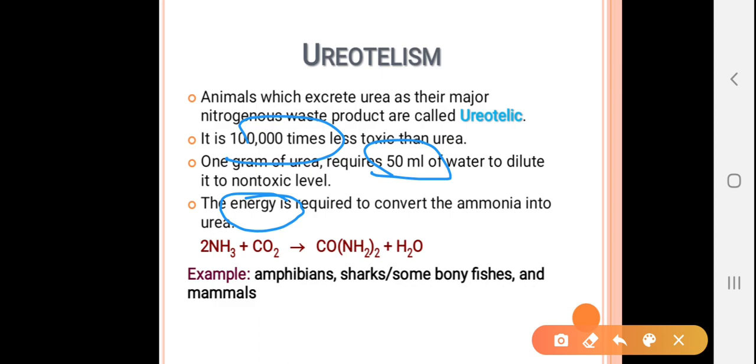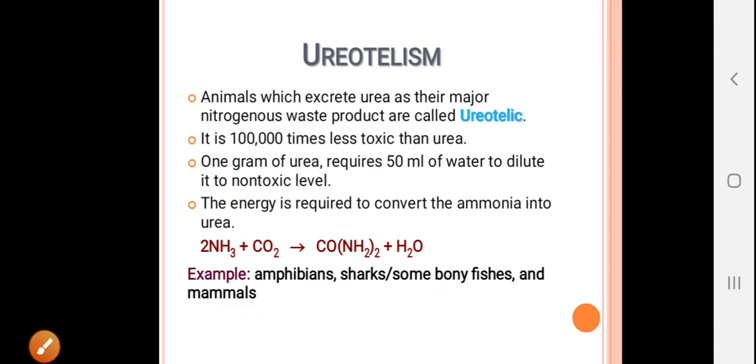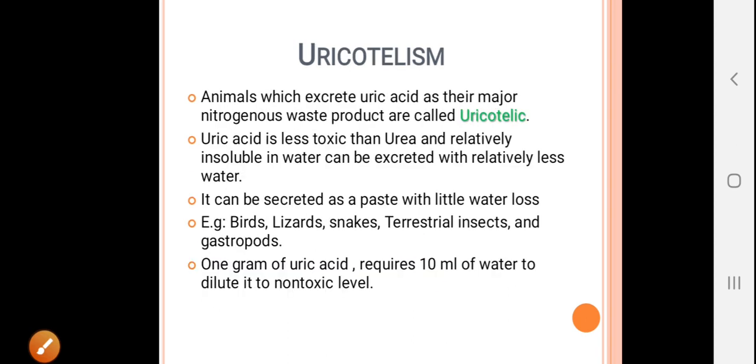Mammals, amphibians, sharks, and bony fishes mostly excrete their nitrogenous waste in the form of urea. Uricotelism is the last one. Animals which excrete uric acid as their major nitrogenous waste product are called uricotelic.